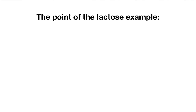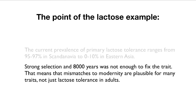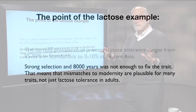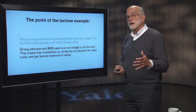The point of this example is that it takes time to bring a gene up to high frequency. The current distribution of that capacity across the planet ranges from 95 to 97 percent in Scandinavia to 0 to 10 percent in Eastern Asia. Strong selection over 8,000 years was not enough to fix the trait. That means mismatches to modernity are plausible for many traits, not just lactose persistence in adults — in many aspects of our biology, if we are encountering an environment that has changed considerably, we may not be reacting appropriately.